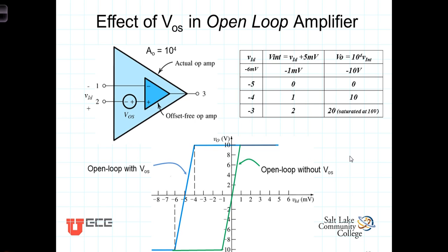In an open loop amplifier, which means that there's no feedback, the offset will very likely saturate the amplifier to either plus or minus VCC, even when there is no input signal applied.